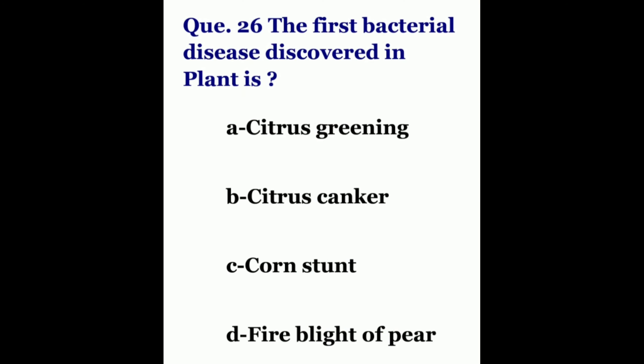Question 26. The first bacterial disease discovered in plants is? The options are citrus greening, citrus canker, corn stunt, or fire blight of pear. The correct answer is fire blight of pear.